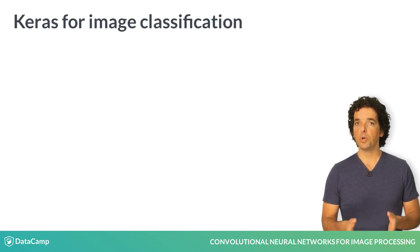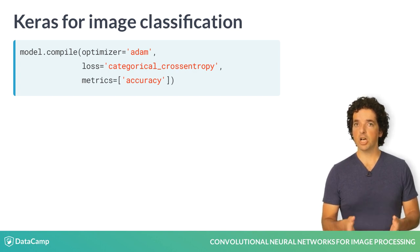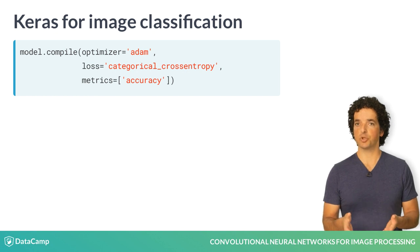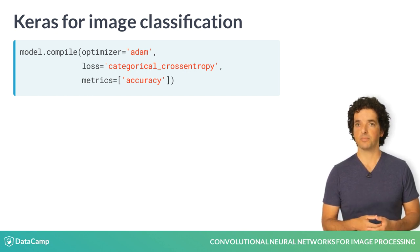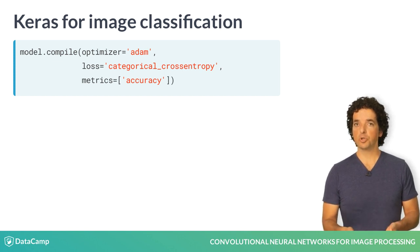Next, we compile the model. We choose the optimizer to use — Adam — and a loss function, categorical cross-entropy, which is appropriate for the classification task. Setting metrics to accuracy tells the model to report accuracy as well.